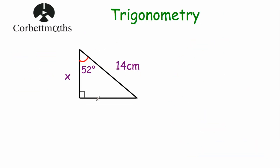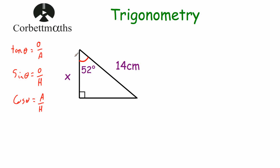Our next question has a right-angled triangle with an angle of 52 degrees, one side of 14 centimetres, and we want to find side x. Writing our trig ratios — tan eta, sin eta, cos eta — and labelling the sides: the side opposite the right angle is the hypotenuse (14 cm), using the 52-degree angle the opposite is at the bottom, and the side labelled x is the adjacent. We're given the hypotenuse and want to find the adjacent, so we're not using the opposite — we cross off tan and sin, and use cos.